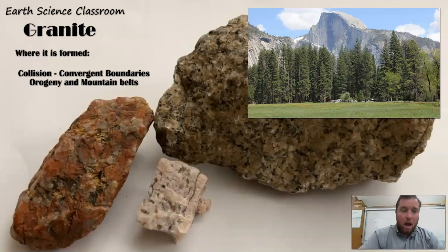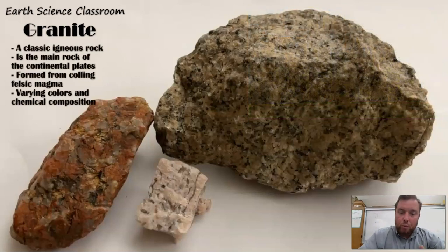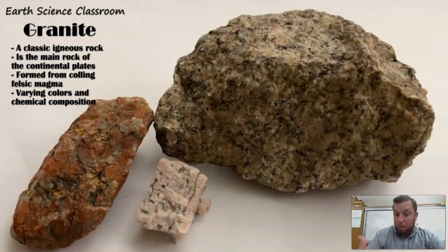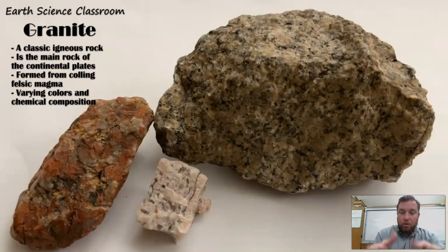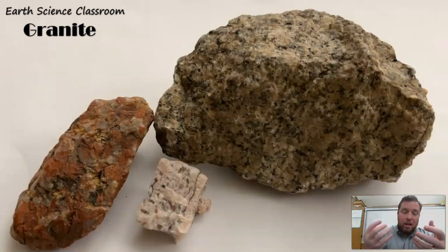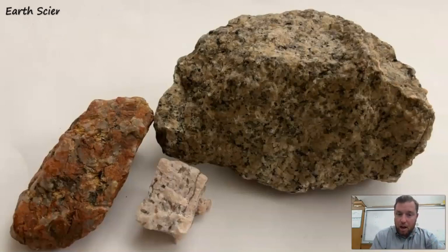The Sierra Nevada mountains in California are pretty much all granite — those mountains are made of granite, which is pretty cool. When you find granite on the surface, it tells you a lot about the history of the area: the depth of formation, perhaps the mountain belt that used to be there, or why it's on the surface through uplift, tectonics, or erosion. The colors, crystal sizes, and mineral content can all indicate the formation history. This is a beautiful and staple rock in geology.